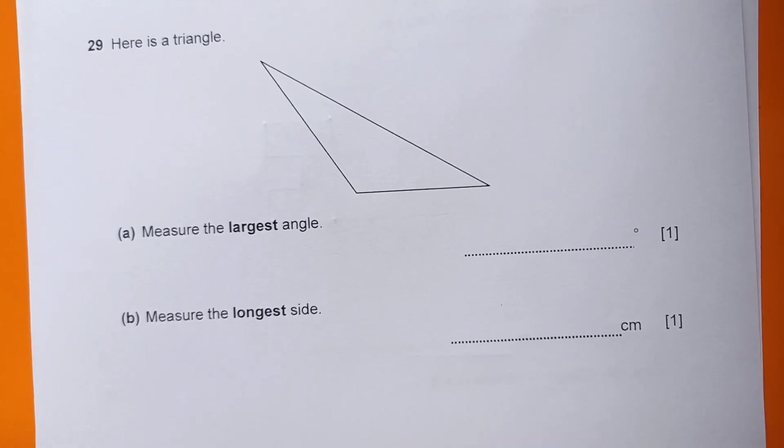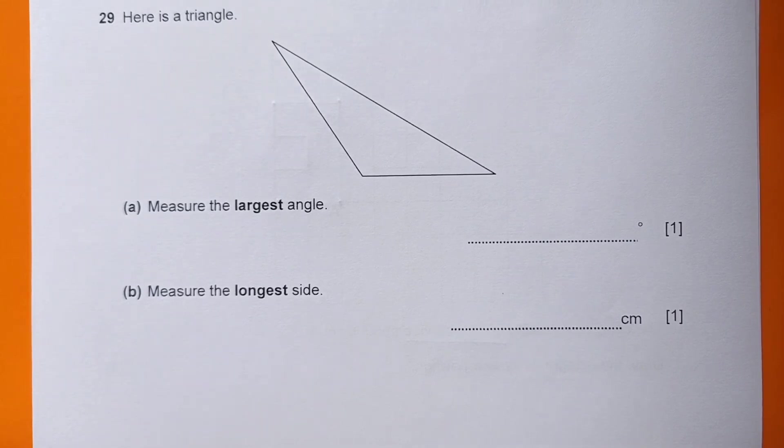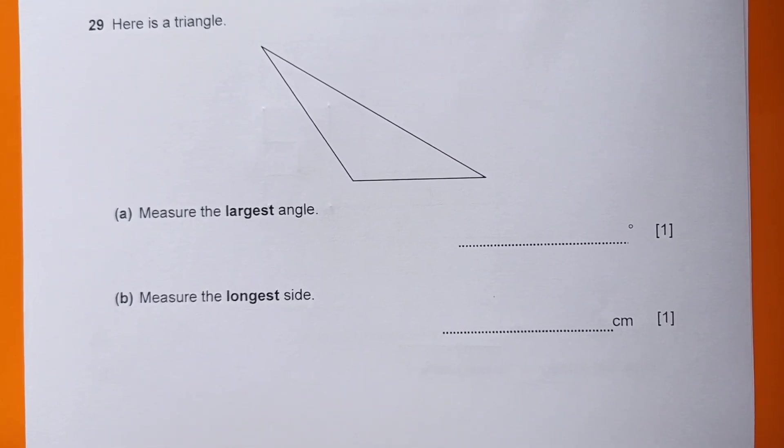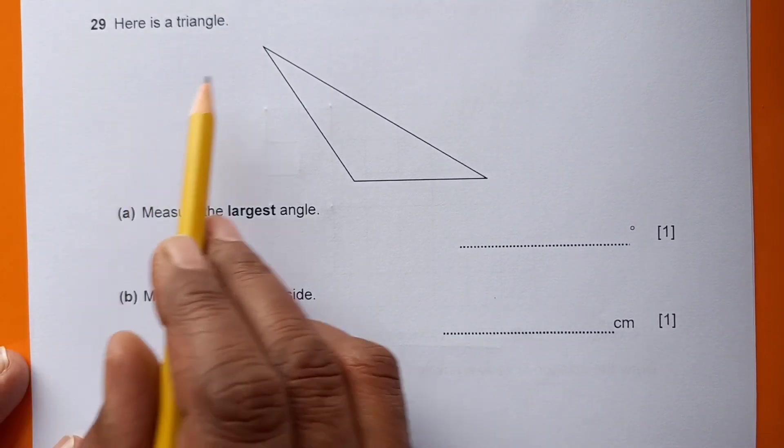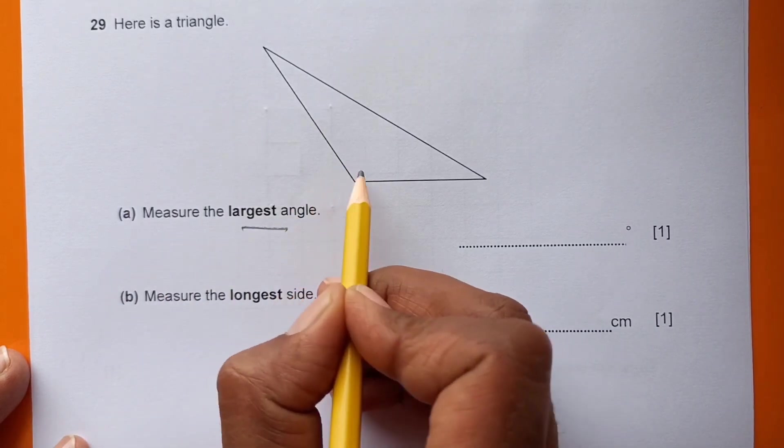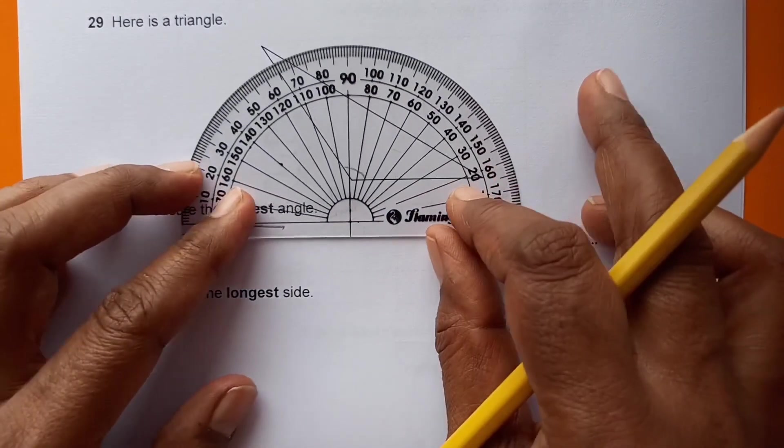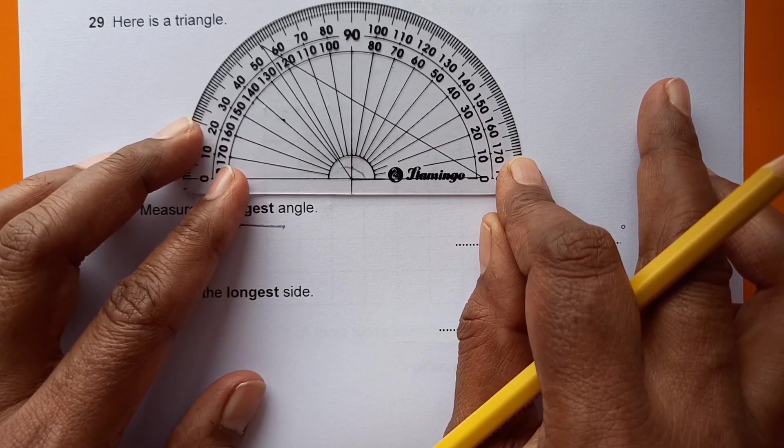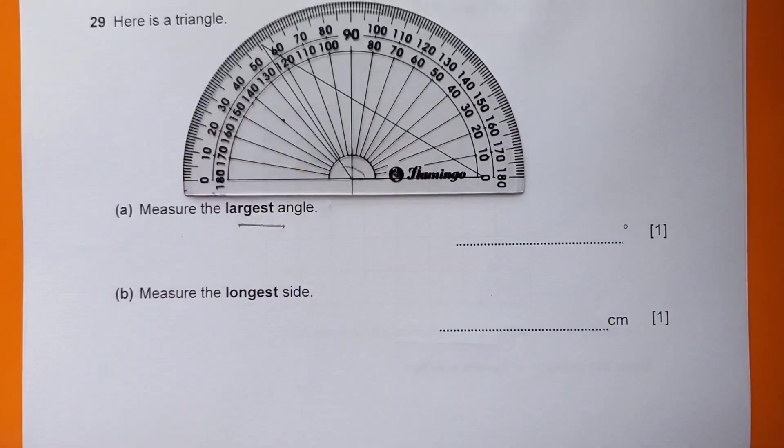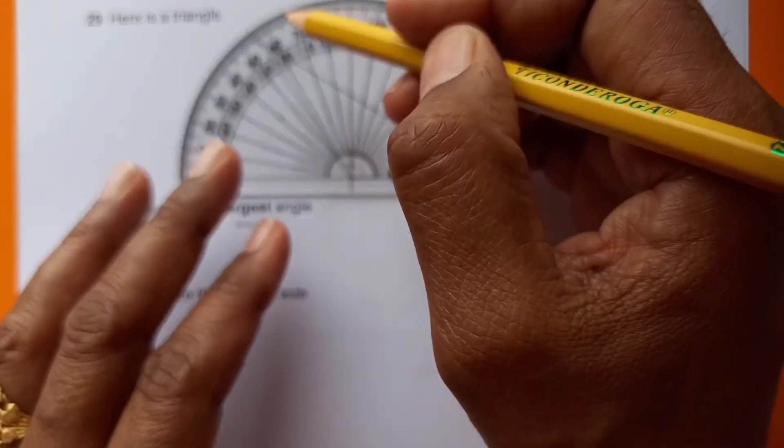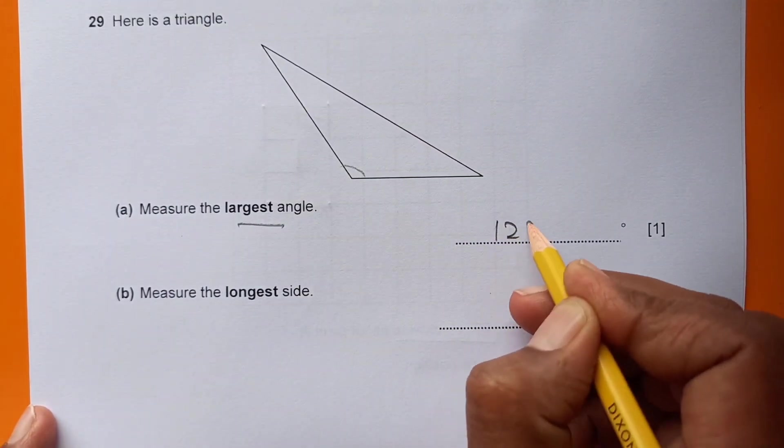Number 29: This is the last question of this paper. I hope you guys understood everything. Please press the like button if you liked the video and subscribe to my channel if you have not done yet. Share it with your friends. Here is a triangle. Measure the largest angle. This is the largest angle here, so we can use this. I'll put it here like this. This is more than 120, so this is 124 degrees, one less than 125.